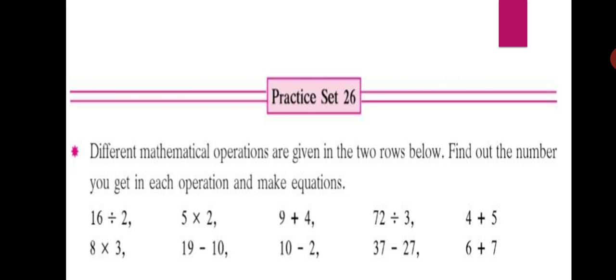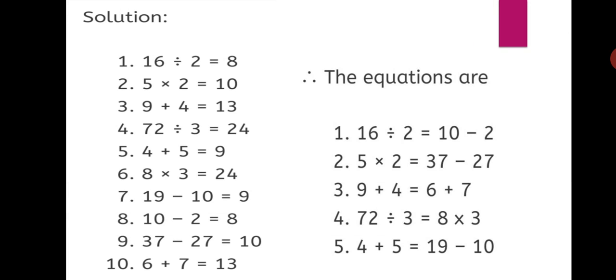16 divided by 2, it is quite simple, its answer is 8. 5 into 2 is 10. Are these two operations equal? No. We have to search which answer will match with the operation given here, so that we can make equations. First, let us find out the answers to these operations. 16 ÷ 2 = 8, 5 × 2 = 10, 9 + 4 = 13.